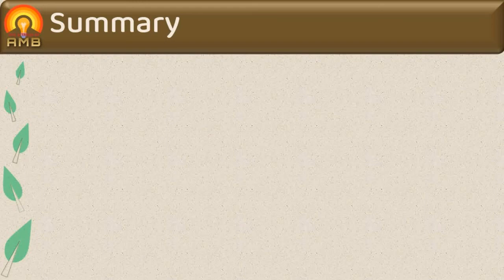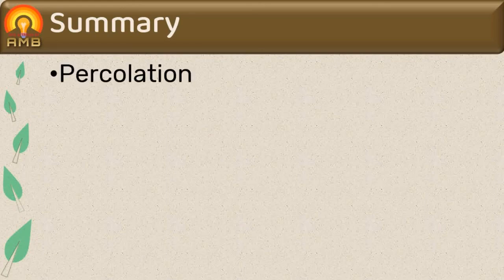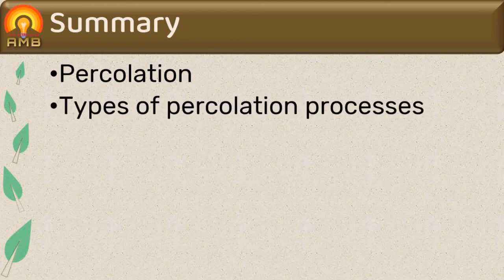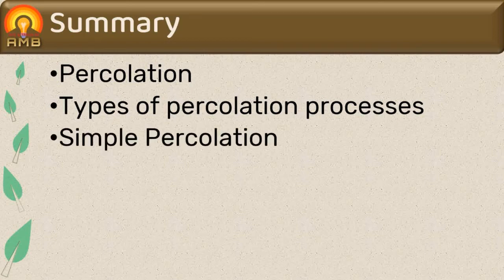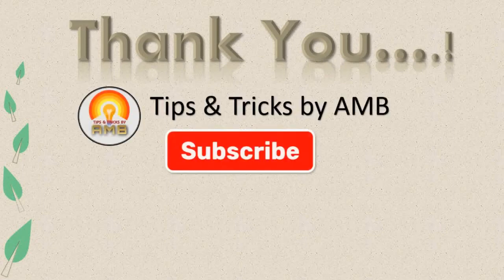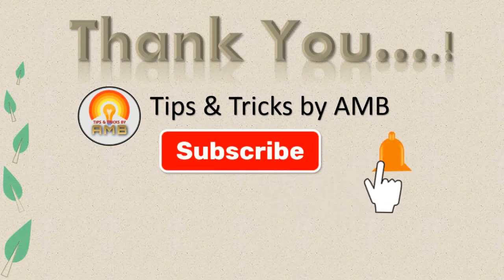To summarize: the process of extraction which involves passage of menstruum through drug for a short period of time is called percolation. The three types are simple percolation, percolation for concentrated preparations, and continuous hot extraction process. In this presentation we discussed simple percolation in detail. Other types of percolation will be discussed in the next presentations.